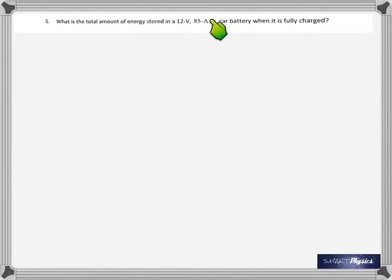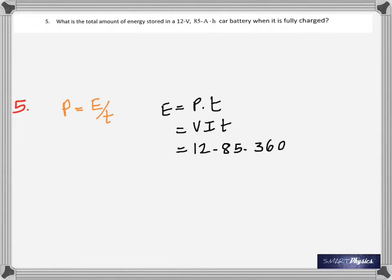Okay, so you see this is a new unit, ampere-hour. It's the product of current and time, so that must be charge, right? Okay, to find energy, we know power is energy over time. Energy is power multiplied by time, but power is the product of voltage and current. Here we have the voltage as 12, the current is 85, and the time is one hour, because it's 85 ampere-hour. So if you are taking a current of 85 amps, it will only work for one hour, and one hour is equal to 3600 seconds.